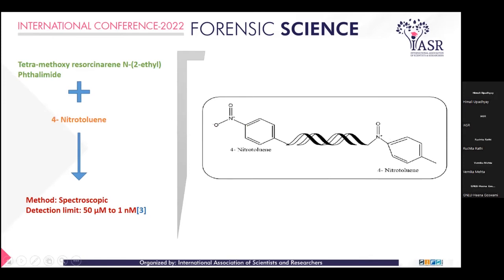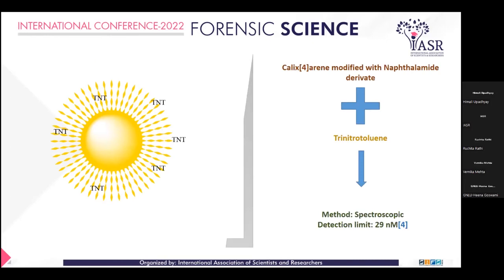Next, tetramethoxy resorcinarene is used. Tetramethoxy resorcinarene and 2-ethyl-thioamine is used for 4-nitrotoluene detection. In this reaction, UV-visible spectroscopy is used which shows a detection limit up to 50 micromoles to 1 nanomole. Then, a receptor made up of calix[4]arene modified with a naphthalamide derivative is used to detect trinitrotoluene. This receptor is shown here, and the detection limit we get is up to 29 nanomoles.